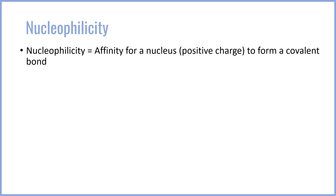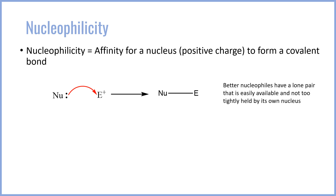The first thing we should do is define nucleophilicity, as it is a term most people are not familiar with until organic chemistry. Nucleophilicity is the affinity for a nucleus — that is, a positive charge — to form a covalent bond. This is a little different than definitions like basicity, because it is specifically the affinity for a nucleus to form a covalent bond. In arrow pushing, the nucleophile has an extraneous lone pair which it donates to the electrophile, which has a partial or full positive charge, forming a single bond between them.